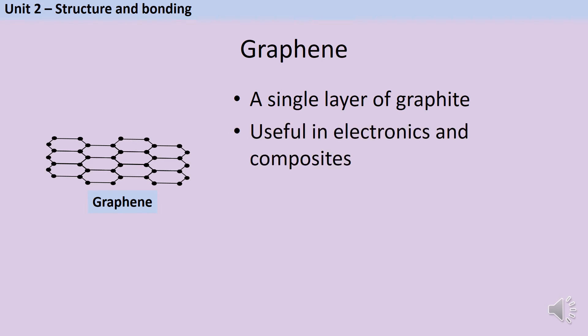It's very useful in electronics, because it still has delocalised electrons, just like graphite, and therefore it conducts electricity, but because it's just in a single layer, it's possible to bend it, and so it has real prospects for use in wearable electronics. It's also used in composite materials.